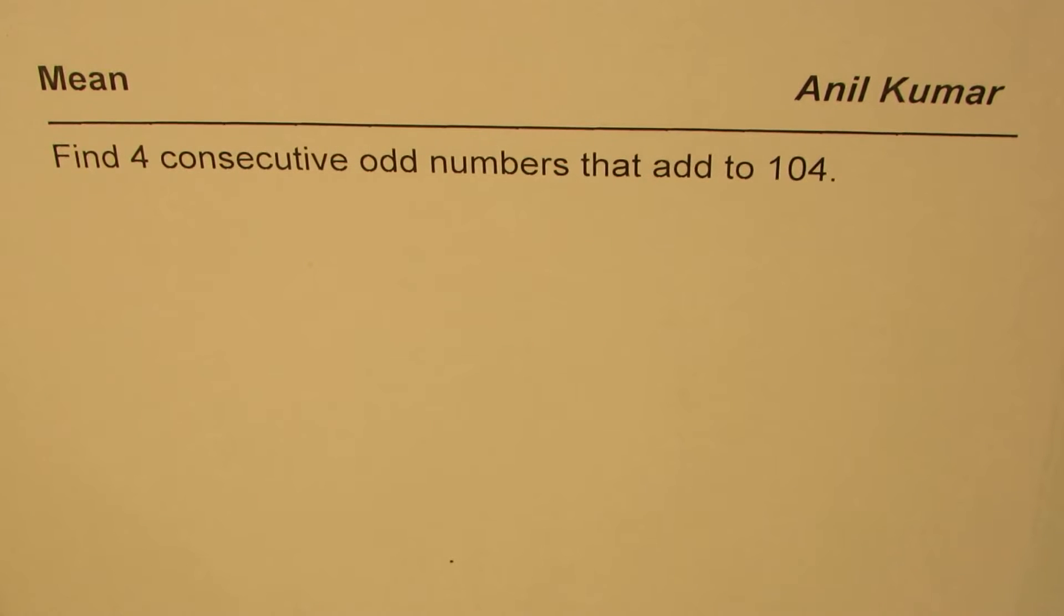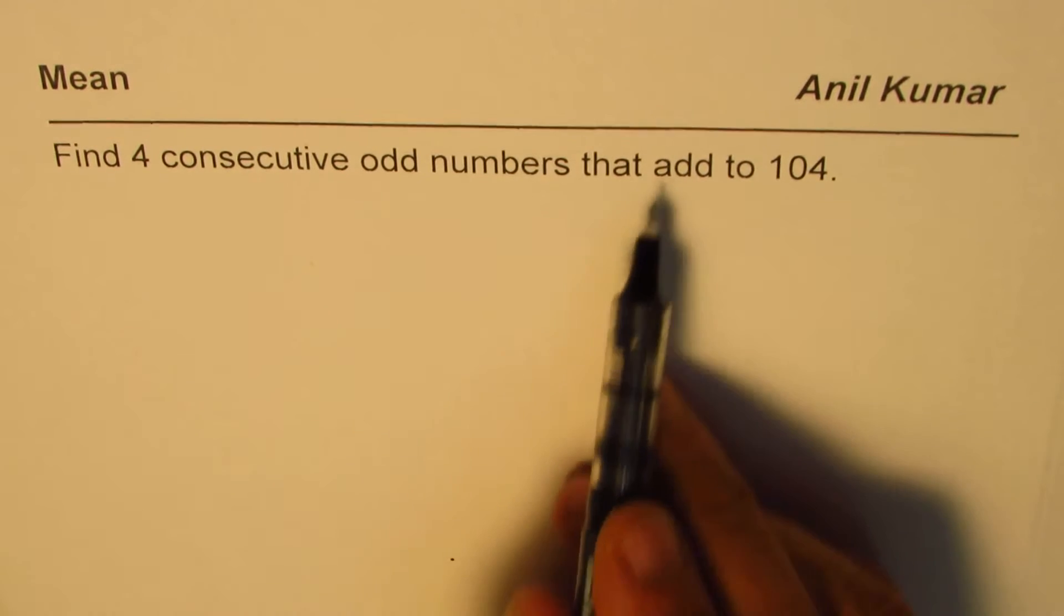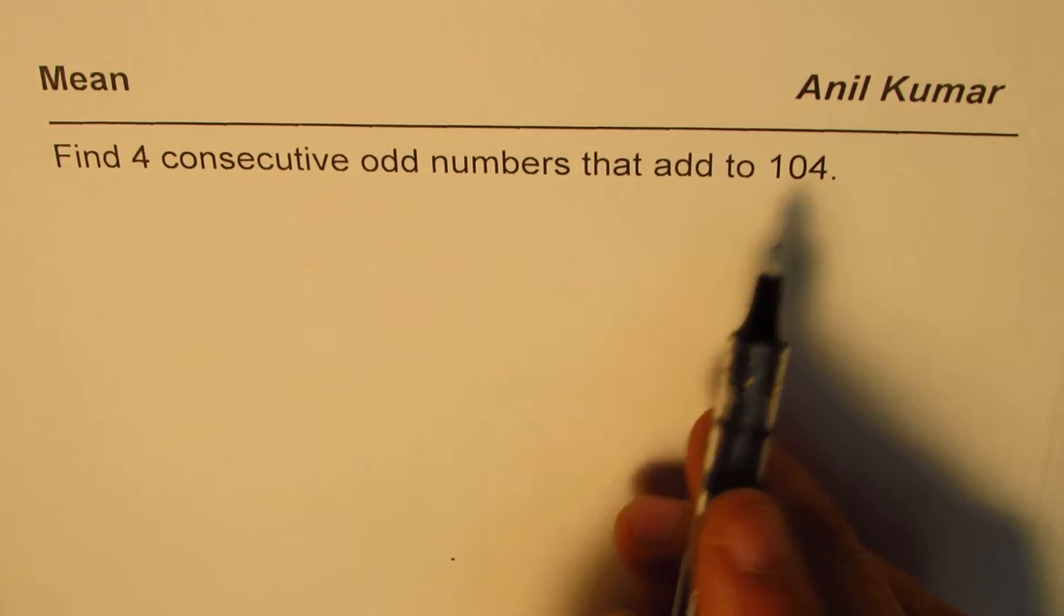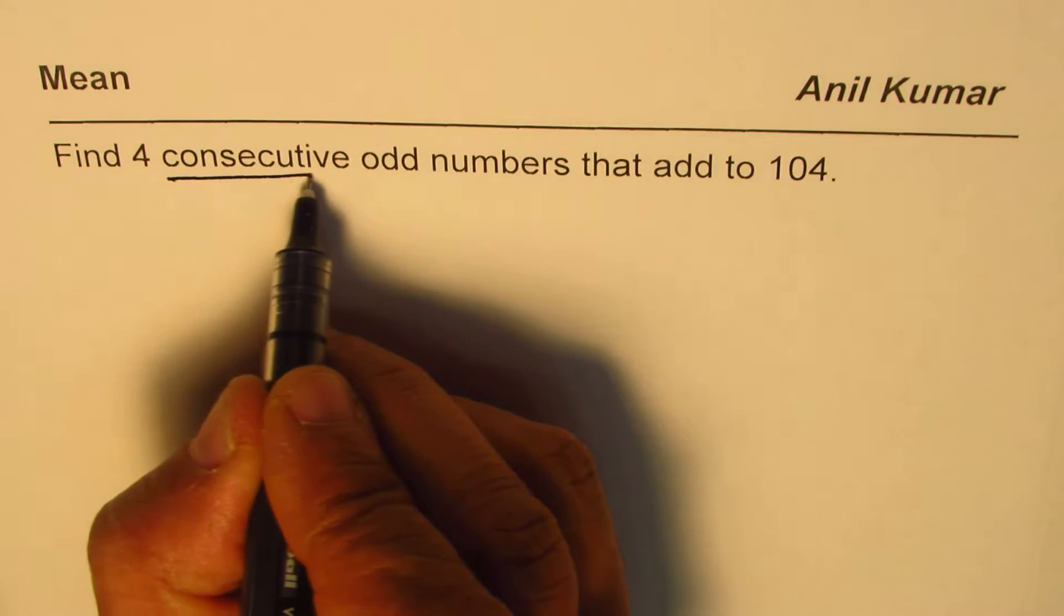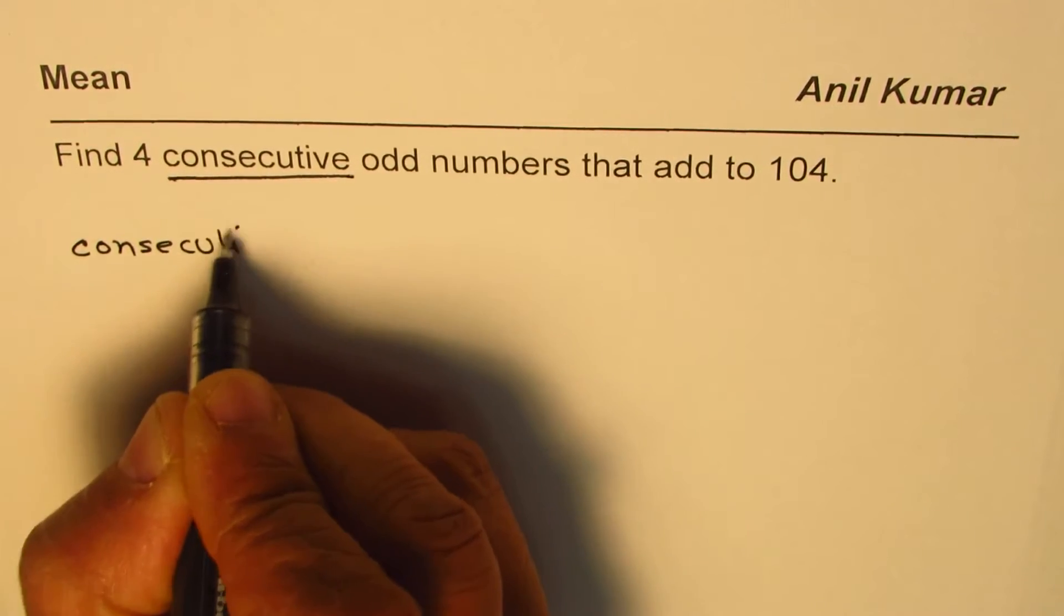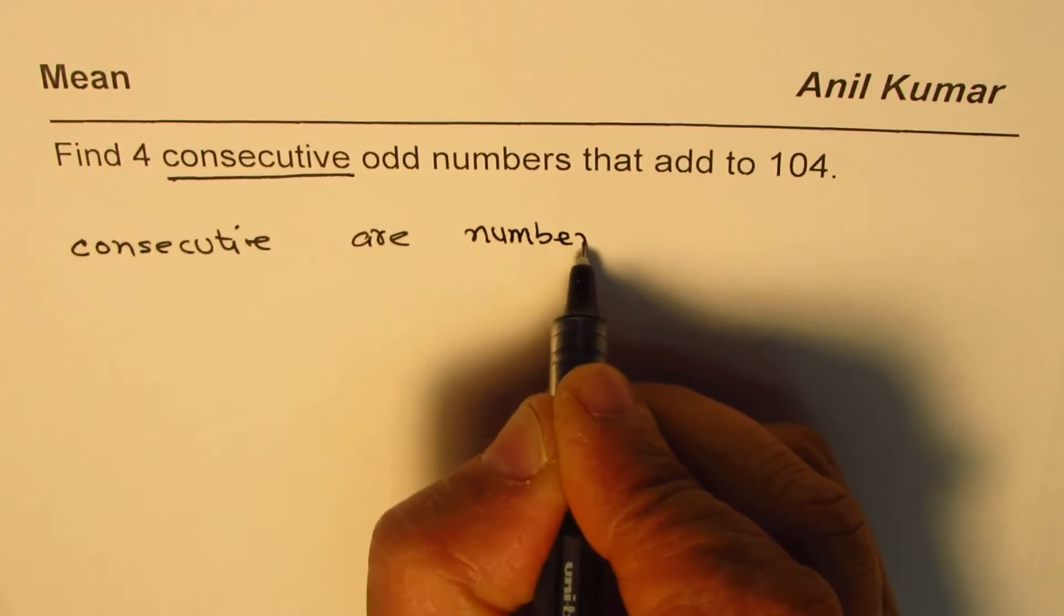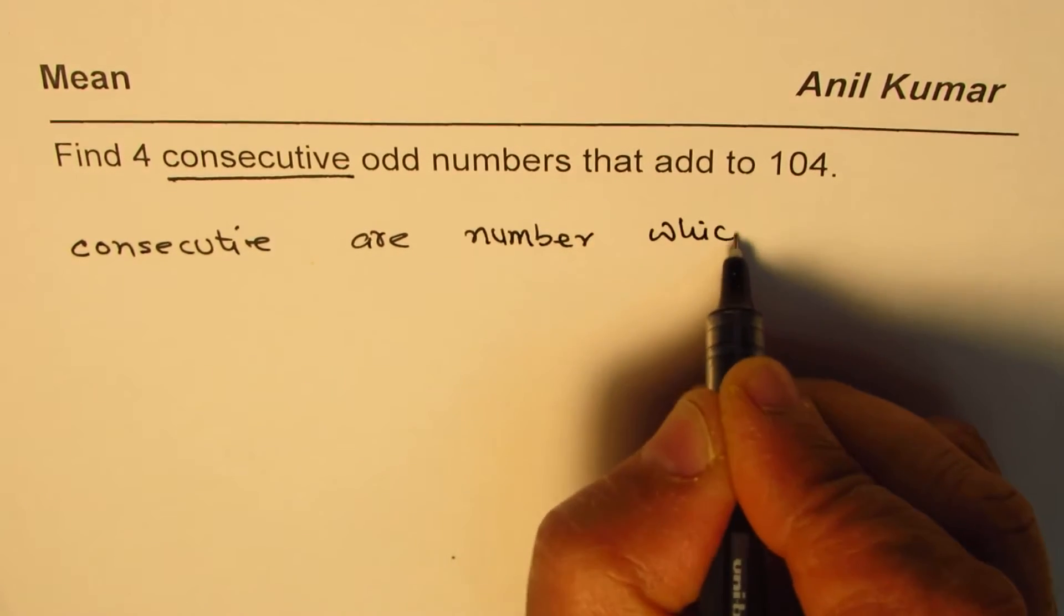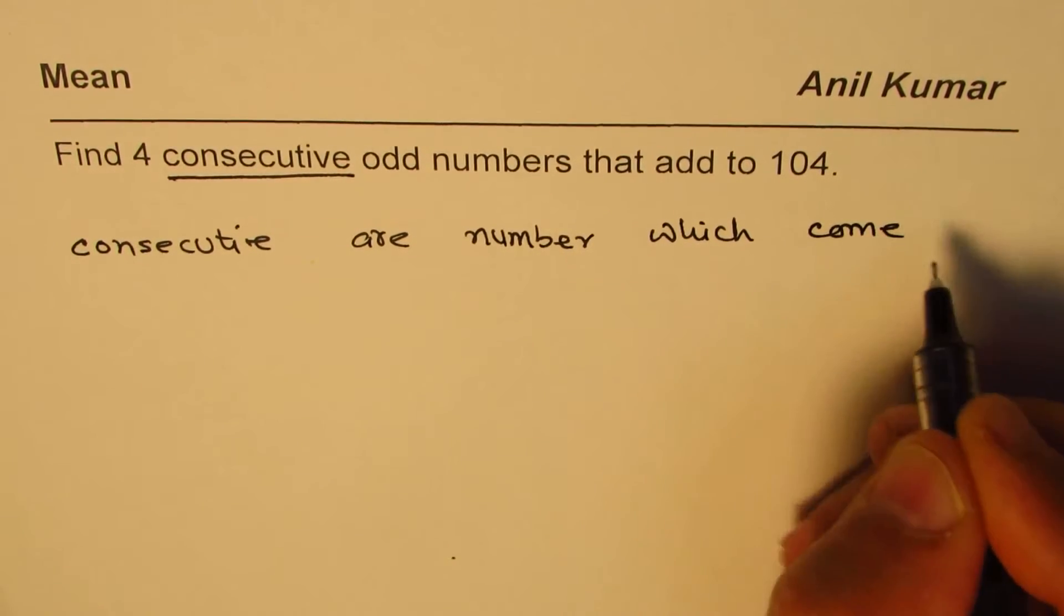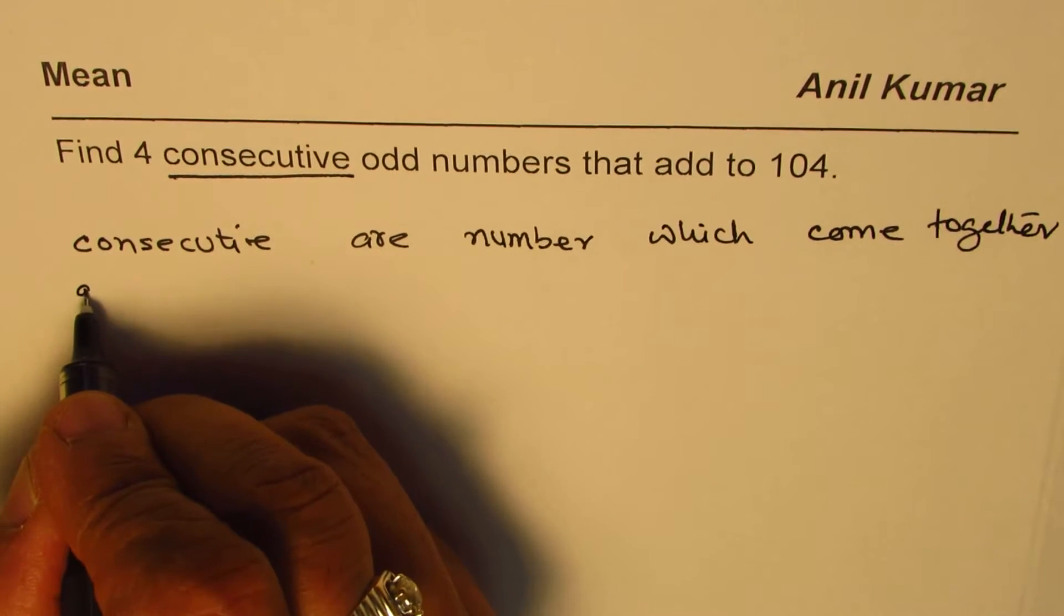I'm Anil Kumar and here is a very interesting question for our middle school students. The question is: find four consecutive odd numbers that add to 104. Let's understand what is consecutive. Consecutive numbers are numbers which come together, one after one.